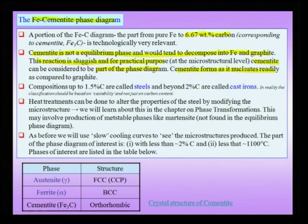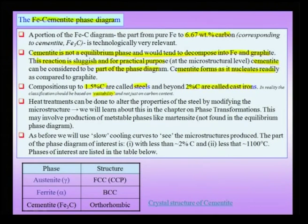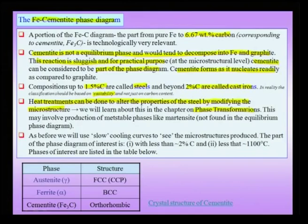When cooling from the melt, cementite forms more readily as a nucleus compared to graphite, so the phase that typically forms on cooling is cementite. Compositions with low carbon are called steels and those with high carbon are called cast irons — though in reality, castability is the true classification criterion. An important point is that heat treatments can alter the properties of steel by modifying the microstructure, allowing for microstructure engineering.